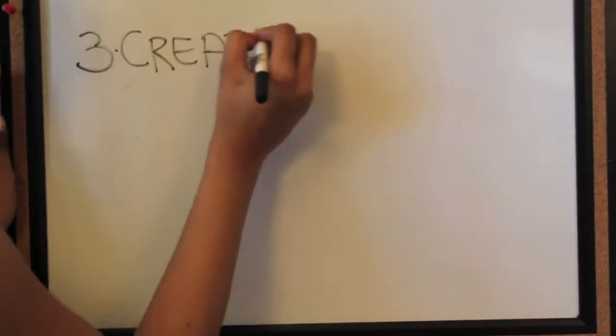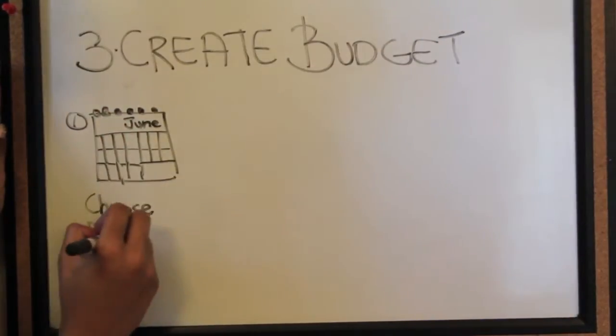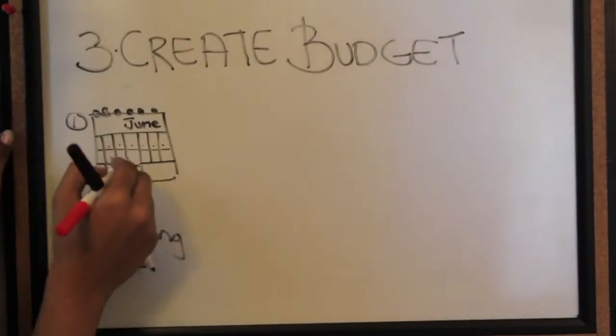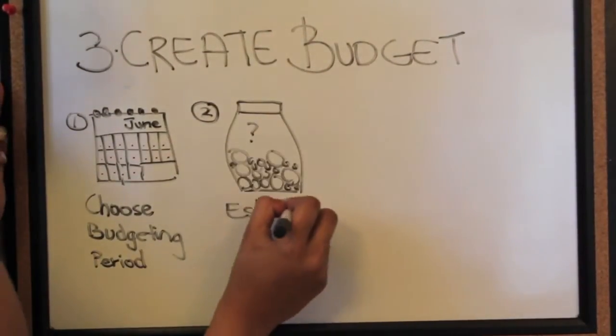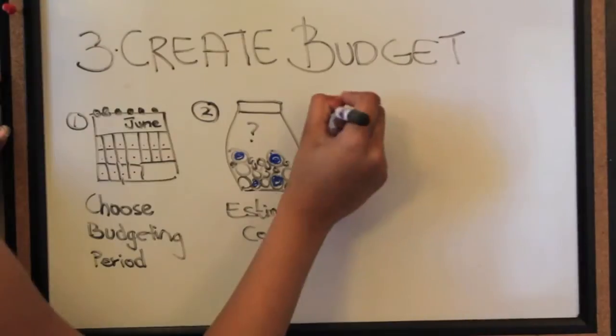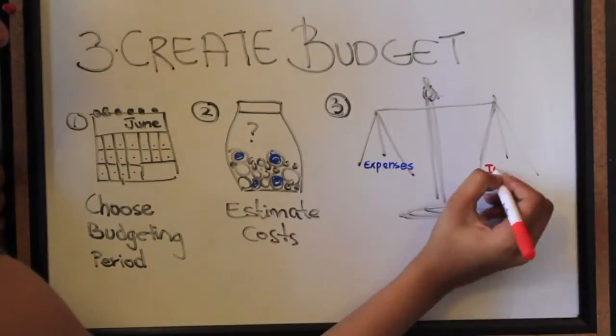The third step is to actually create your budget. So first, choose your budgeting period. Secondly, estimate your costs and expenses. And finally, balance out your expenses with your income.